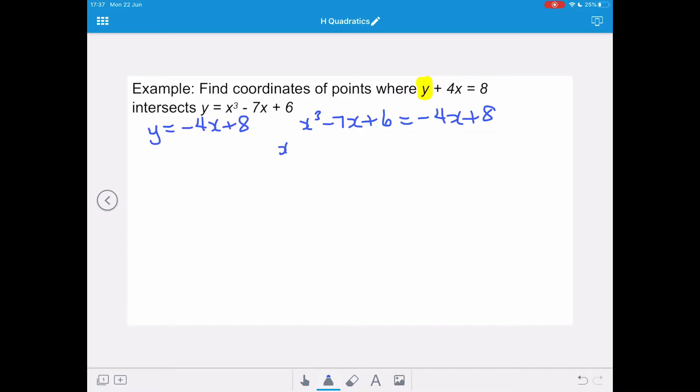So we want to rearrange so that we can work out our factors. So we've got x cubed plus 0x squared minus 3x minus 2 is going to equal 0. And we're going to put those coefficients into our nested form. So we've got 1, 0, negative 3, and negative 2.